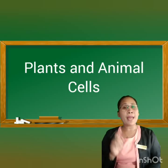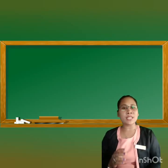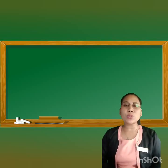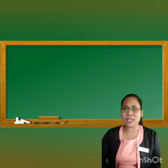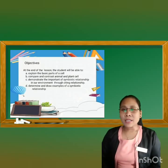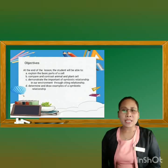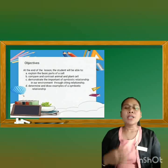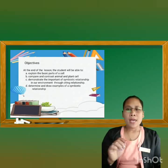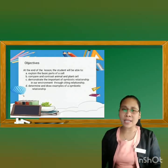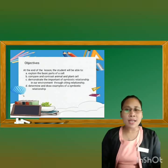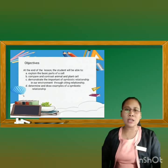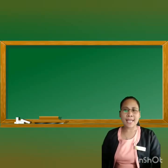Now we are going to have a new lesson for this evening — all about plant and animal cells. Let me introduce the objectives. At the end of the lesson, the student will be able to: explain the basic parts of a cell; compare and contrast animal and plant cells; demonstrate the importance of symbiotic relationship in our environment by citing a relationship; and lastly, determine and draw an example of a symbiotic relationship.